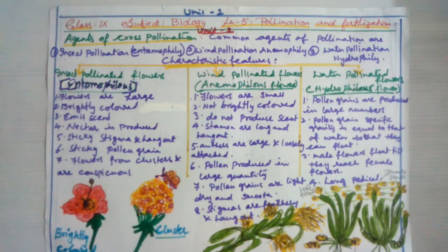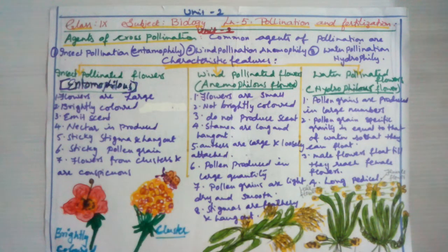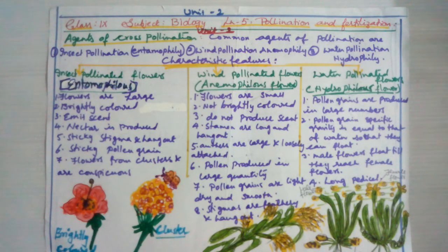The flowers tend to be in clusters to make them conspicuous and easily visible. Even if individual flowers are small — as in Ixora — they are found in bunches so that insects are attracted to them easily. Examples include sunflower and dahlia.